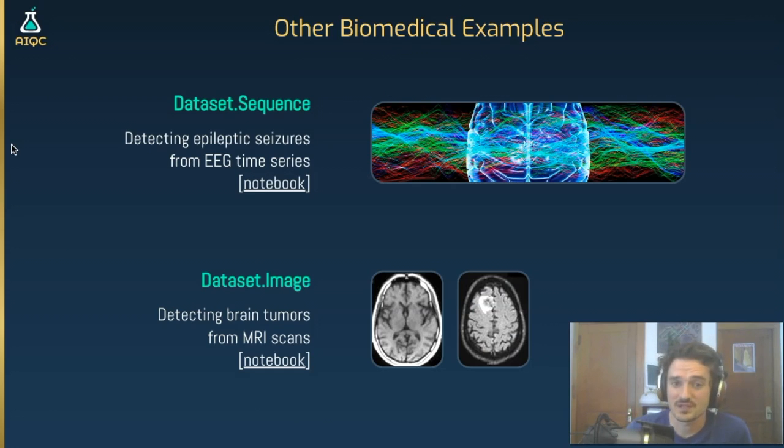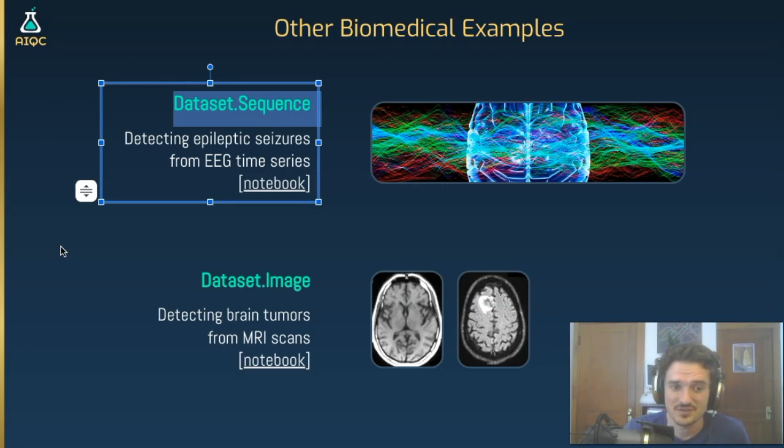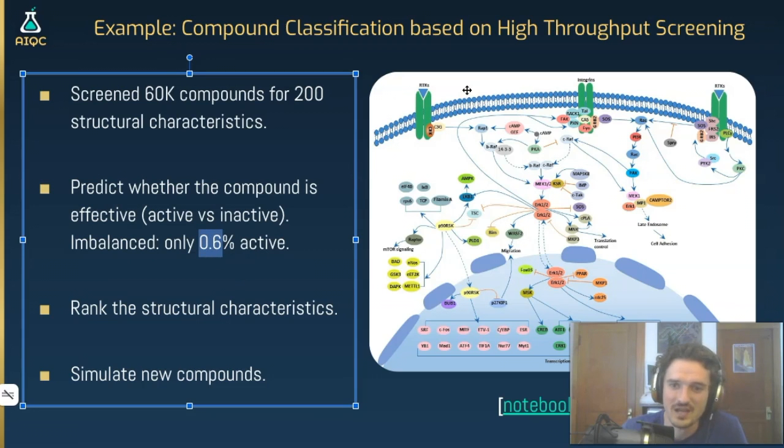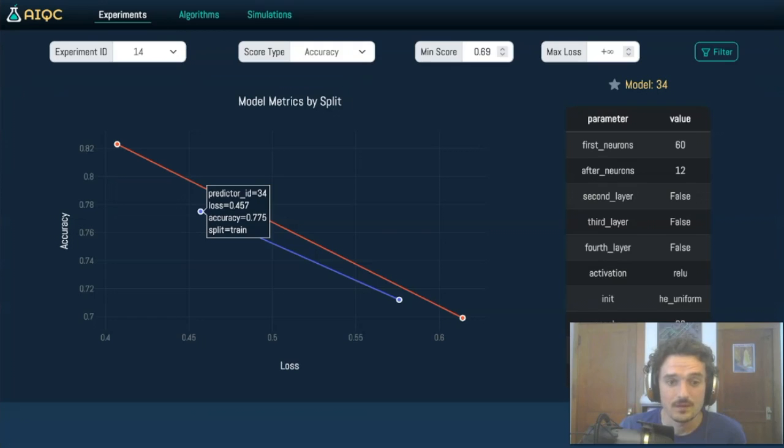And we could go through other examples using different data types, but it's boring because it's so declarative that the only thing that changes is the data type. So we're going to go through another tabular example for drug design, and here the data is not so clean. It's extremely imbalanced. Less than 1% of the compounds from our high-throughput screening experiment are active. We're going to be looking at the MAPK pathway, some kind of kinase. We want to rank the structural characteristics in our compounds that drive the active versus inactive state of the compounds. Then we're going to use our model and create virtual drugs by playing around with the loss space.